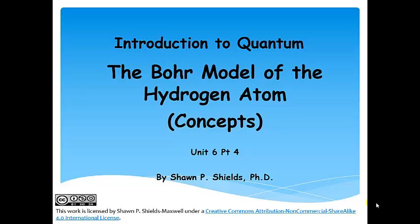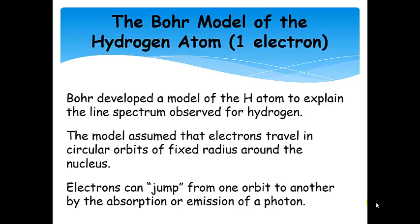Concepts for the Bohr model of the hydrogen atom. We have just discussed the line spectrum for hydrogen. We saw lines of very specific energies correlating to specific wavelengths of photons. In the emission spectrum, those lines were caused by emission of photons with just the right energy. In the absorption spectrum, we saw that if we shine white light on hydrogen atoms, the wavelengths corresponding to that energy of photon will be absorbed, leaving the rest of the white light to pass through.